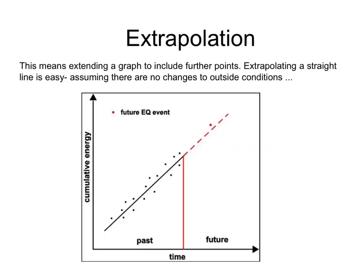Now on to extrapolation and interpolation. Extrapolation means where you extend a graph to include further points. So if you've got a straight line, this is fairly easy. You can extend the line and therefore you can assume that future events will be similar to the past events and that we can assume if there's no changes to any of the conditions.